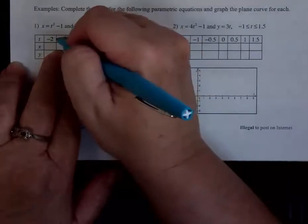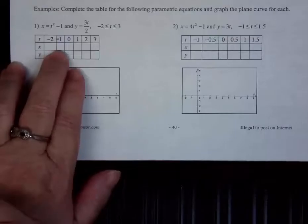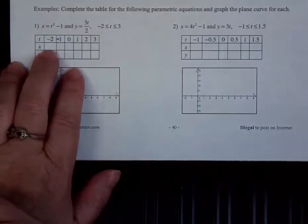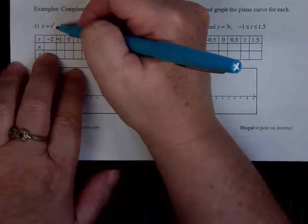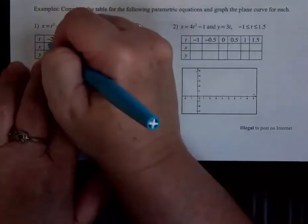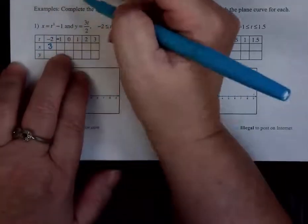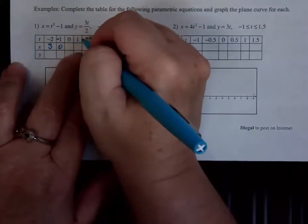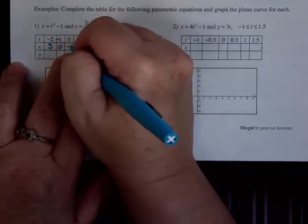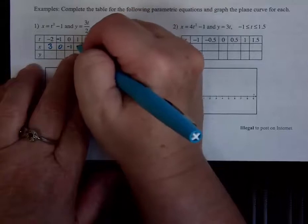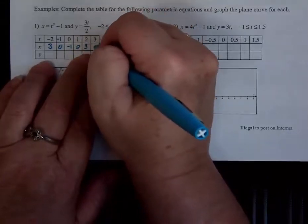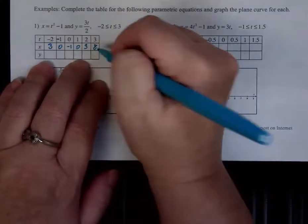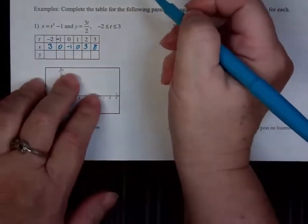Please correct that — the second number is supposed to be negative one, not positive one. If I plug negative two in for t, what is x? Three. Negative one gives me zero. Zero gives me one, one gives me zero, two gives me three, and three gives me eight. That was pretty straightforward — plug in the t values.